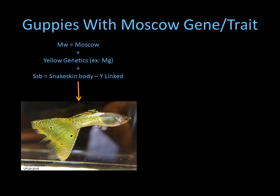In this example, this fish does have Moscow and you can see it here in the anterior part of the body. It has yellow genetics to give the yellow color and it has snakeskin body also, but this is a metal — many times they call this a metal head — but it really is a fish with the Moscow trait and snakeskin body.